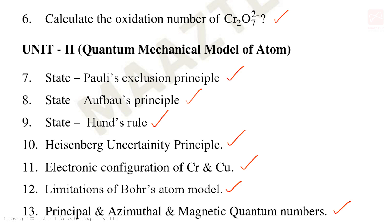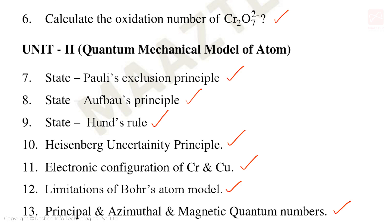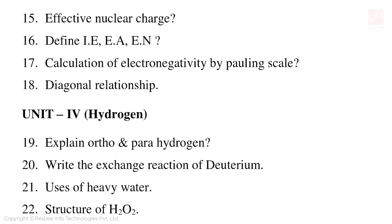Unit 3: Periodic Classification of Elements. Important topics include the law of octaves, definitions of ionization energy, electron affinity, and electronegativity, and calculation of electronegativity by Pauling's scale. These are the 3rd unit important 2 mark and 3 mark golden questions.